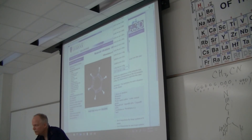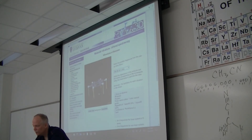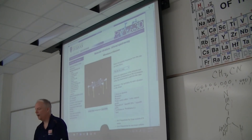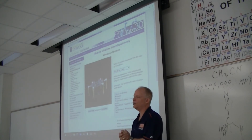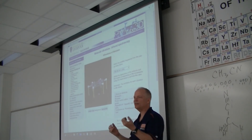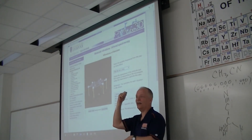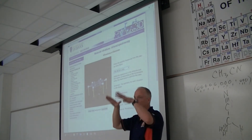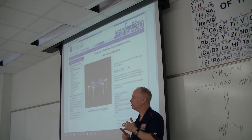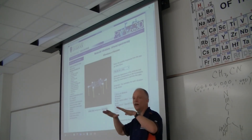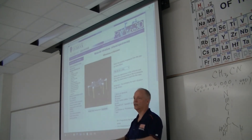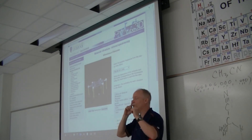The A2u out-of-plane bending mode — another umbrella, but flat. What's the symmetry? The C6 axis is the Z axis, and that motion is up and down along Z. So Z-polarized light would excite this motion. All the positive hydrogens are going down to one side of the molecule, creating a dipole, and then it completely reverses. This will be really strong in the infrared.